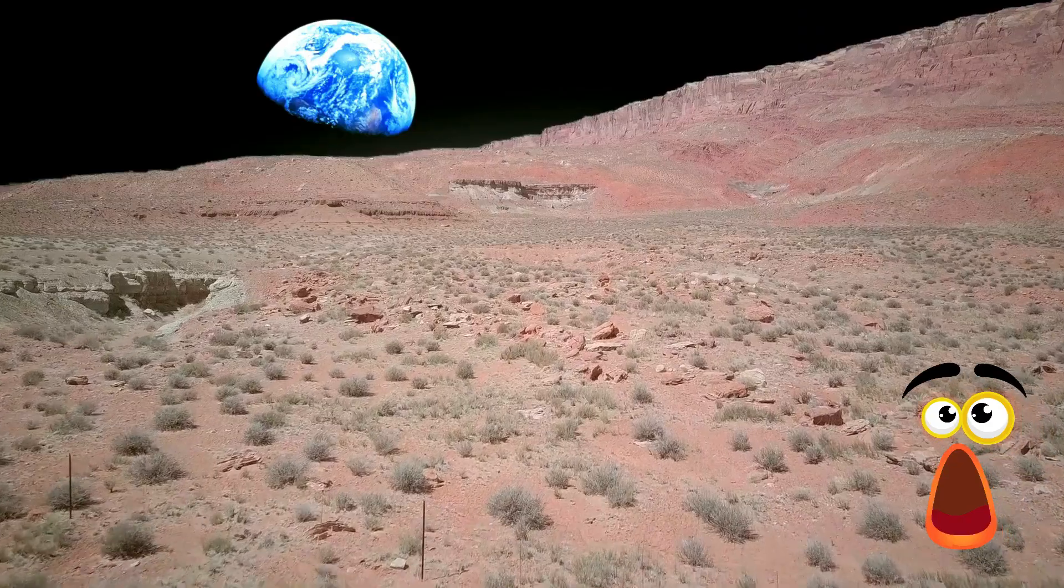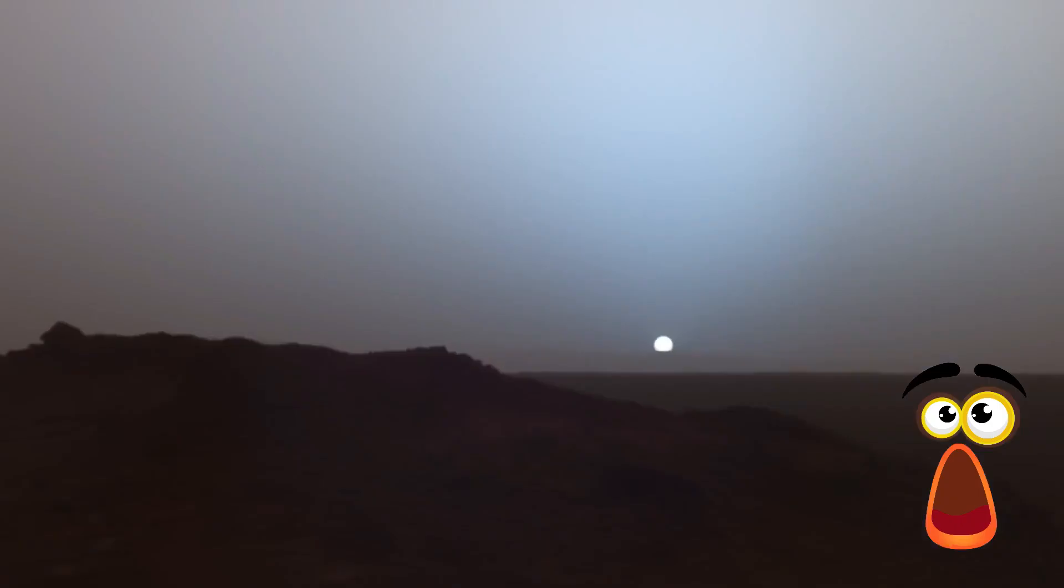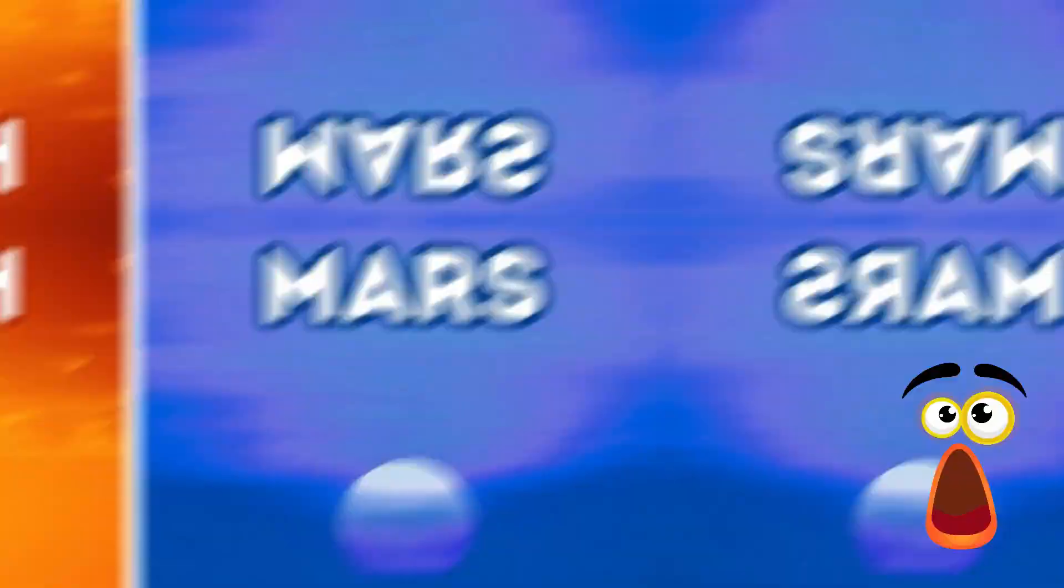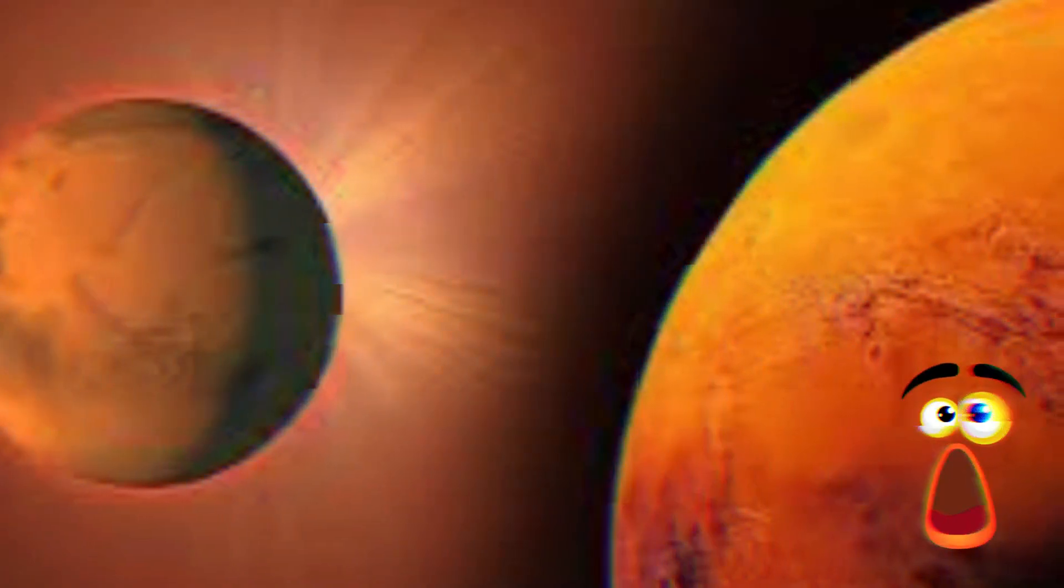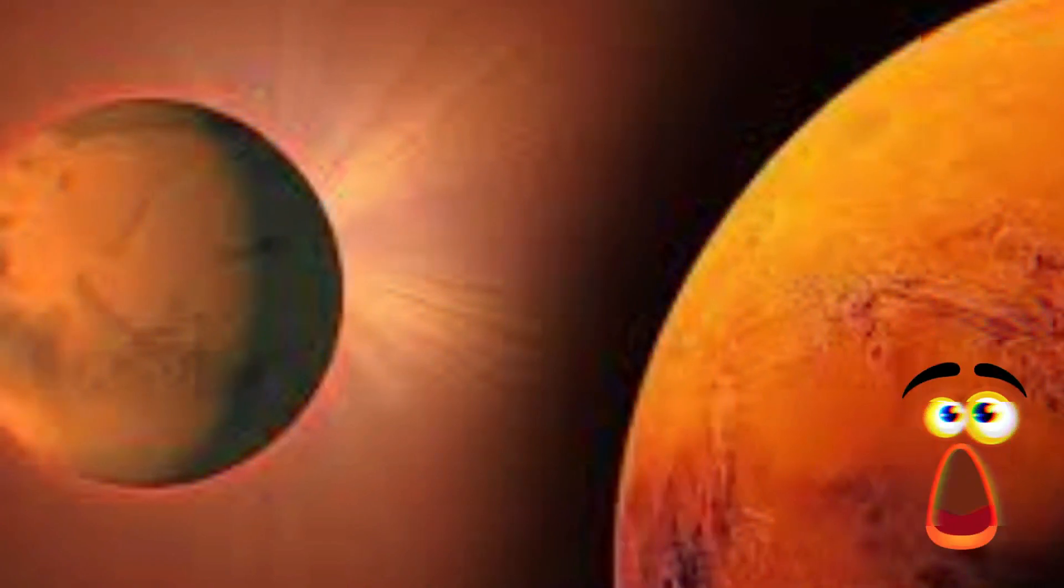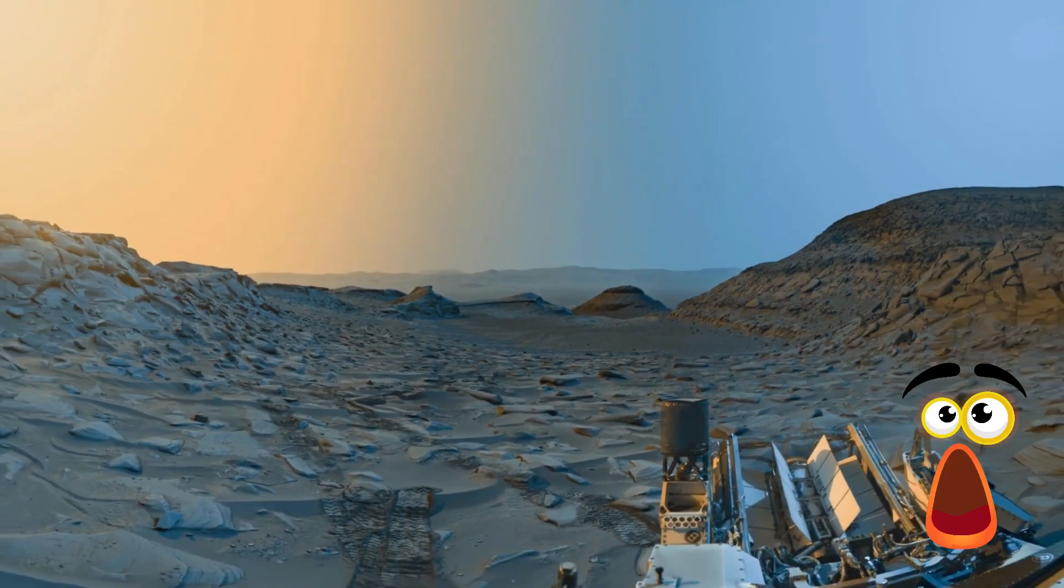On Earth, nitrogen and oxygen molecules scatter shorter wavelengths of blue and violet light more than longer wavelengths of red and orange light, which is why the daytime sky is typically blue. On Mars, however, a distinct scattering effect is produced by the thin carbon dioxide atmosphere.